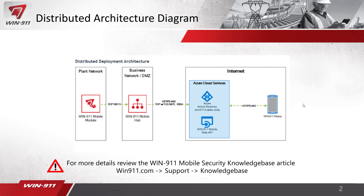If your Win911 machine does not have internet access, you need internet access to use the mobile app. So what we set up here is the mobile hub — a piece of software that sits elsewhere in the network, in the DMZ or somewhere on the business network that does have internet access. It basically acts as a proxy, handling the outbound connections to the Azure cloud service and then sending the info back to Win911.